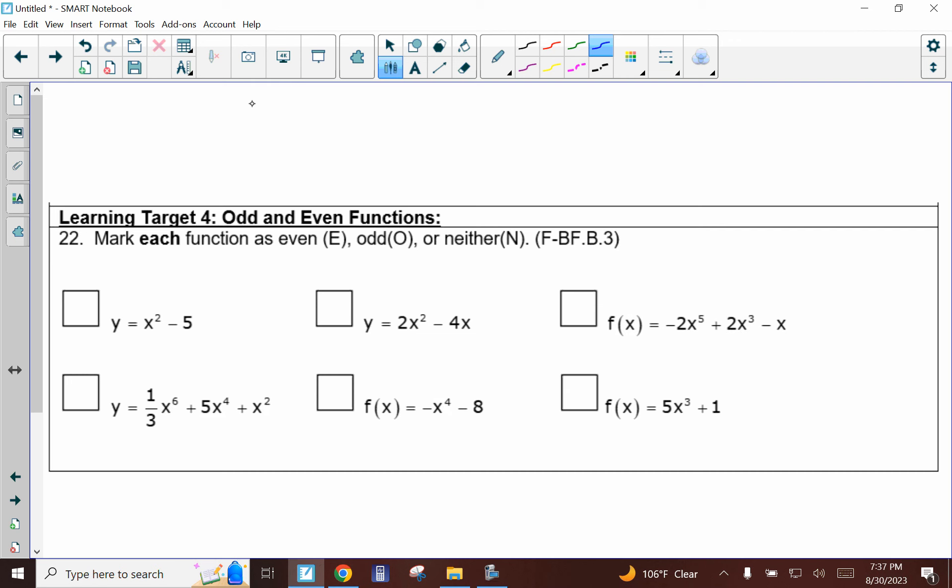So the rule is: evens are numbers like zero, two, four, six, and so on, and then your odds would be one, three, five, seven, and then that list goes forever.